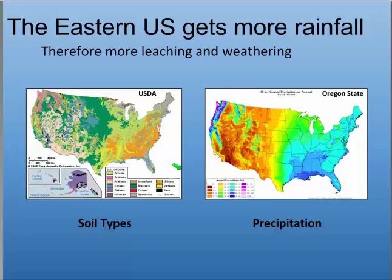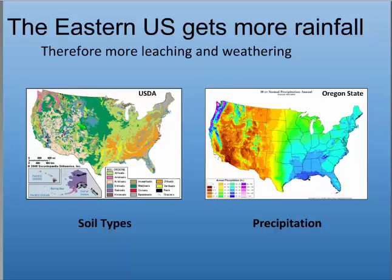In desert areas with more evaporation than rainfall, salts accumulate at the surface, so those soils have a higher pH because bases aren't washed out. The eastern United States gets a lot more rainfall, so our soils are older and more leached. Looking at a US soil map, the orange ultisols — meaning ultimate weathering — are found on the east coast, matching closely with high rainfall areas. In drier desert regions, you see aridosols. We're going to have more acidic soils on the east coast.